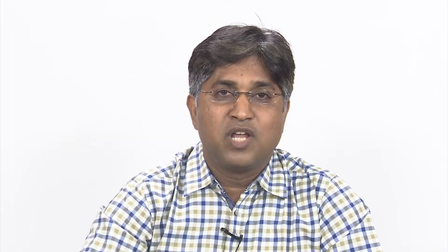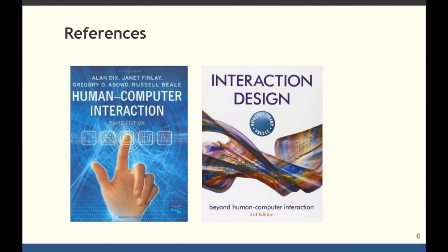As we go about the layout, I would suggest that there are certain interesting references and books that you should be visiting as part of this course. To name a few, here are the 4 books: the first is The Essential Guide to User Interface Design, the second is Designing the User Interface, the third is Human-Computer Interaction, and the fourth is Interaction Design. I welcome you again to this course on Interaction Design and I look forward to meeting you through online lectures in the time to come. Thank you very much.